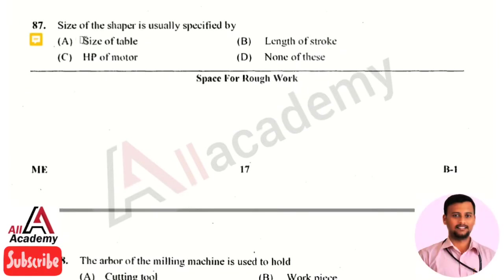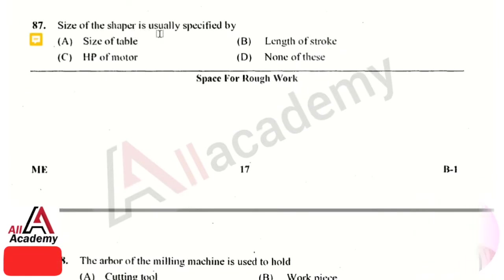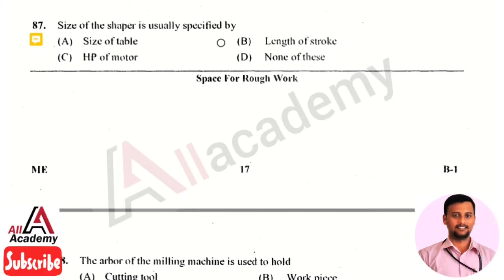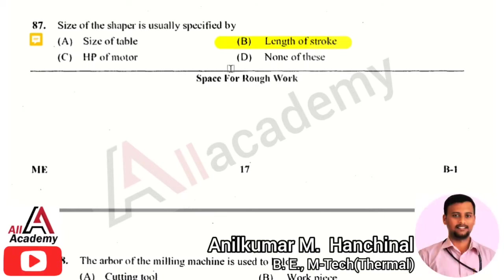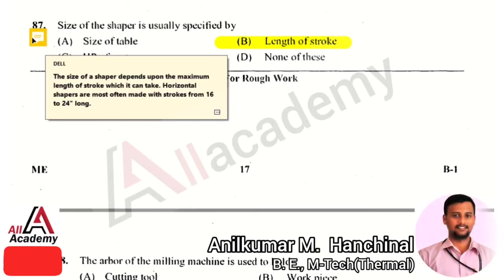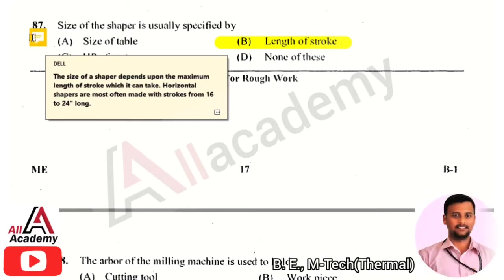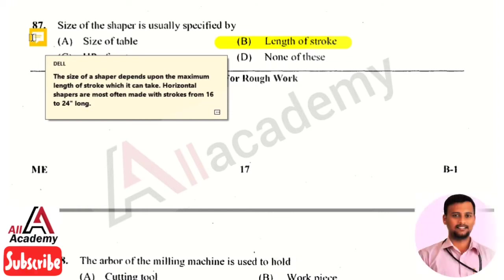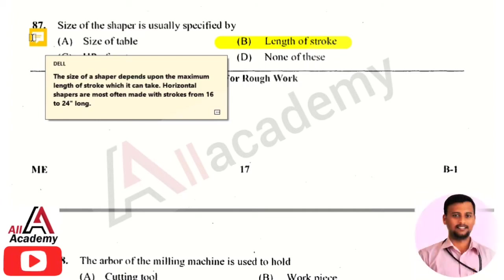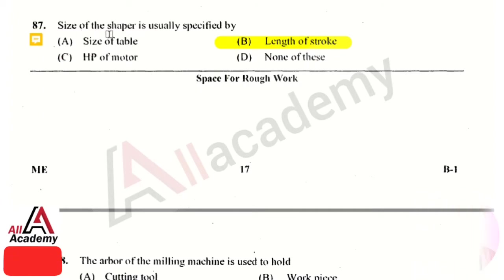The next question: the size of a shaper is usually specified by — the right answer is option 2, that is length of stroke. The size of a shaper depends on the maximum length of stroke it can take. Generally, for a horizontal shaper it is almost 16 to 24 inches long. The size of a shaper or shaping machine is usually specified by the length of stroke.